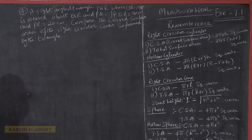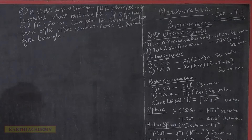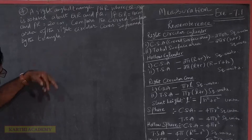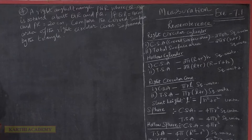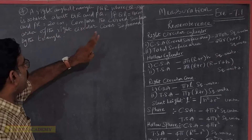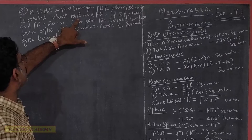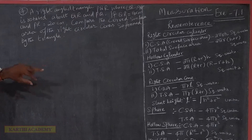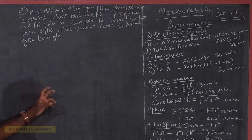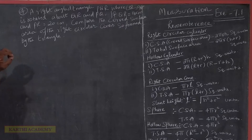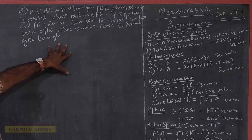We have a right angle triangle where angle Q is 90 degrees. QR and PQ are going to rotate. From this right angle triangle we are going to form two cones — one cone rotating about QR and one cone rotating about PQ. We will find the curved surface area (CSA) of both cones.